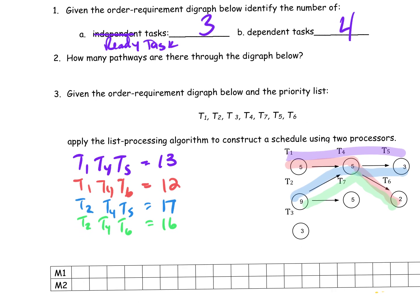I've got one more here — one that goes from Task 2 to Task 7. That's another path, and that's 9 plus 5, which is just 14. And you've got to remember this truly independent task is its own path onto itself, and that's just Task 3. So how many paths do I have here? I have six. I've listed them all, and I know there are six pathways through this diagraph.